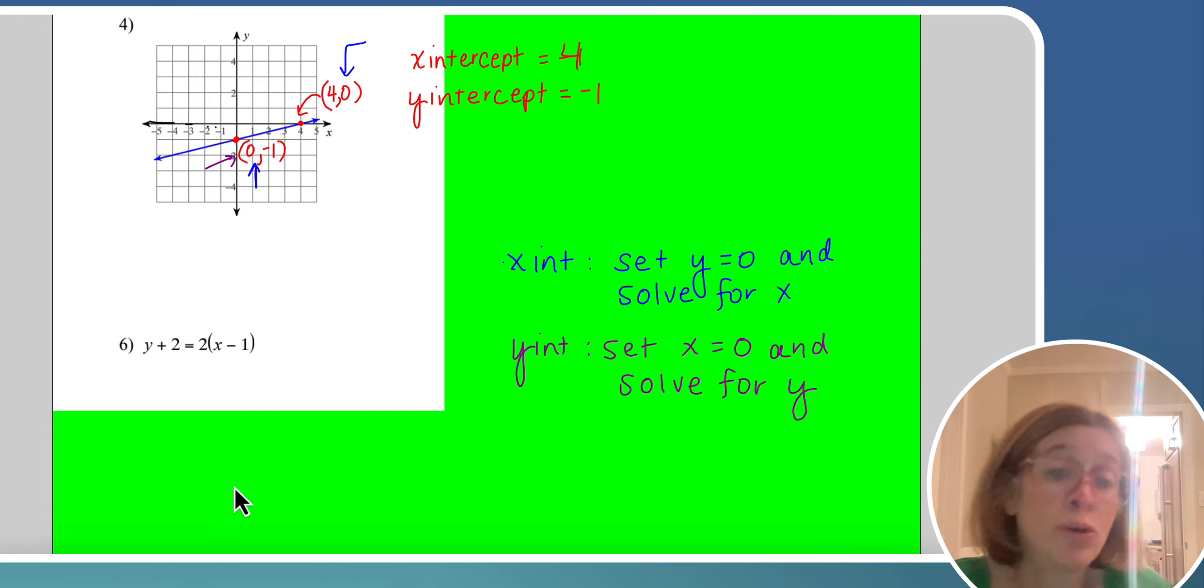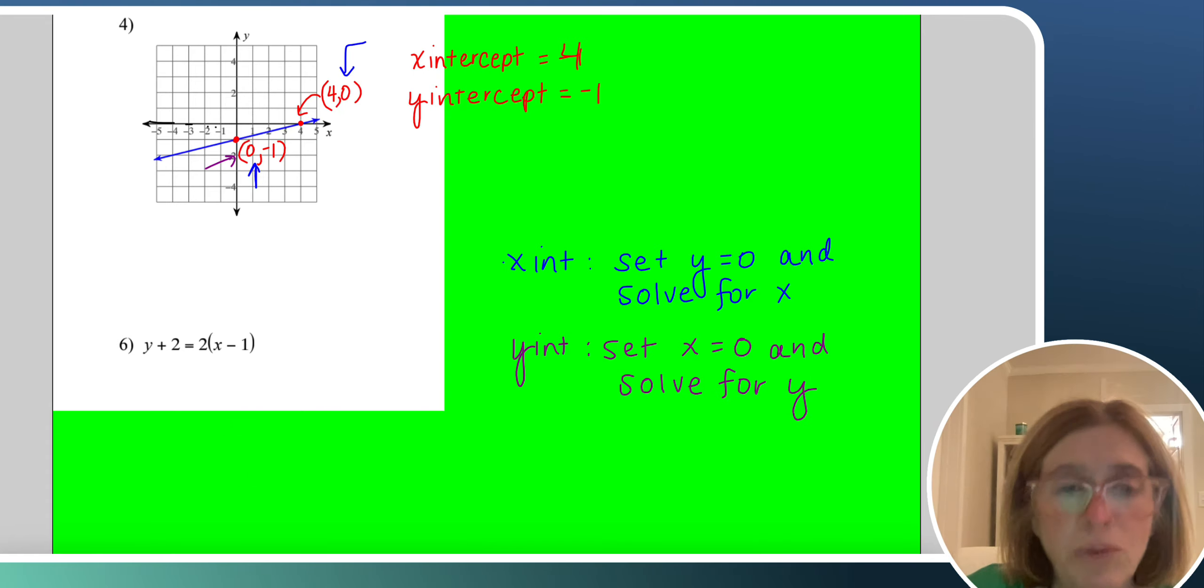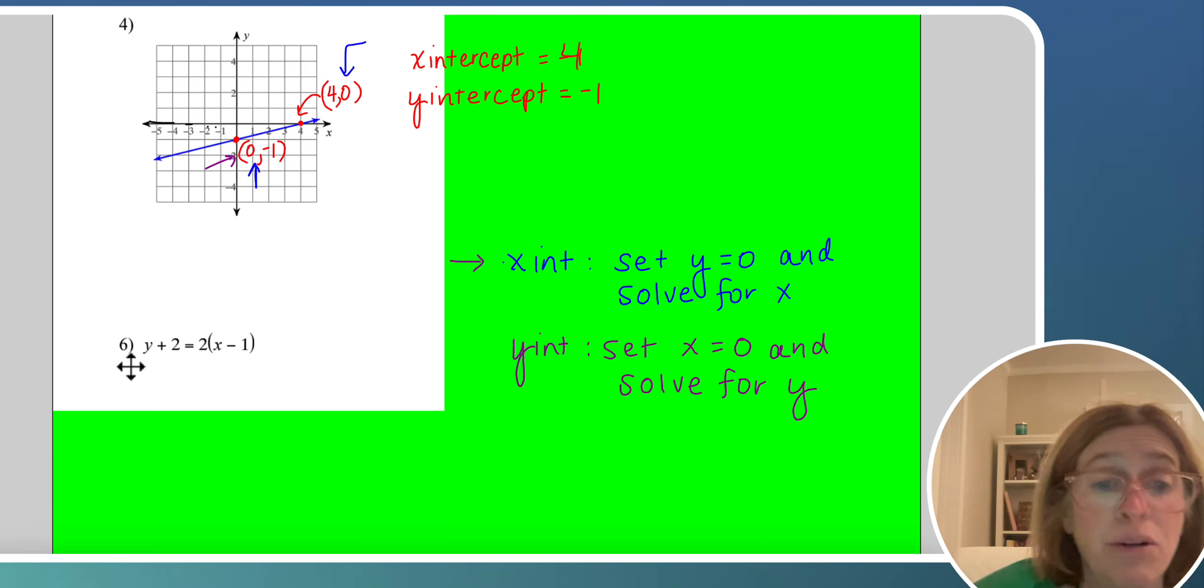Now, you could, if you wanted to, put it into a prettier form. And that usually just makes it a little bit easier for you to do the algebra here. But you don't have to. In this equation right here, one way to find the x intercept is to just set y equal to 0. So plug in 0 for y.